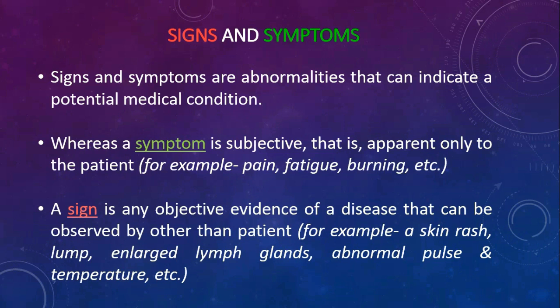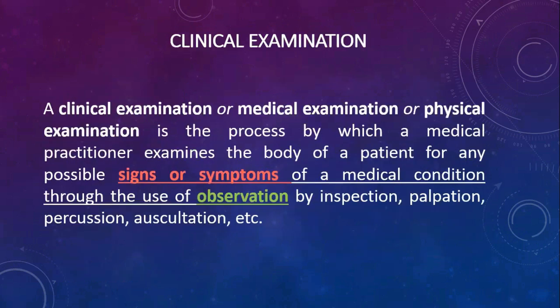Signs and symptoms are abnormalities that can indicate a potential medical condition. A symptom is subjective — apparent only to the patient, e.g. pain, fatigue, burning. A sign is any objective evidence of disease observable by someone other than the patient, e.g. a skin rash, lump, enlarged lymph nodes, abnormal pulse and temperature. A clinical or physical examination is the process by which a medical practitioner examines the body of a patient through observation by inspection, palpation, percussion, auscultation, etc.